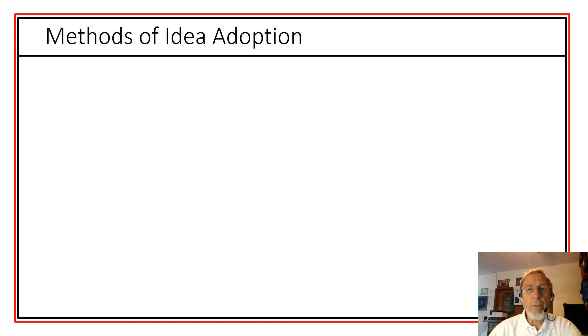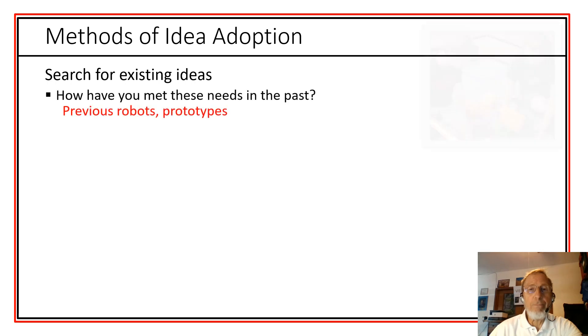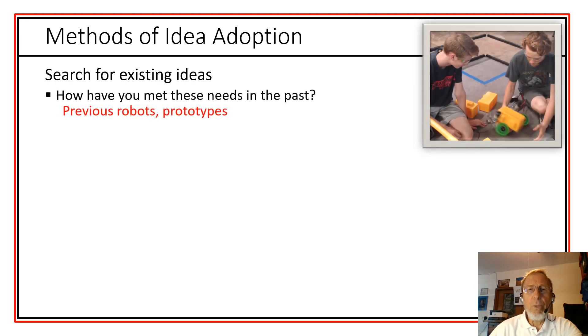When we're generating new ideas, one thing we need to consider is we could simply adopt ideas that already exist. So we begin by searching for existing ideas. They don't need to be novel, but just what are some good ideas that are out there. So where do we look? Well, begin by asking yourself, where have we met this type of a need in the past? Perhaps in our previous robots and prototypes that we tried, we can come up with ideas that might have some value.